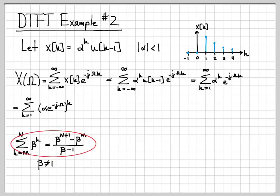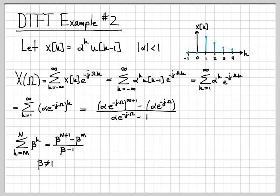So let's go ahead and use this result right here. So if we do that, we can write this as equal to alpha times e to the minus j omega raised to the infinity plus 1 because really our upper limit here is this is n. So we're taking n plus 1 minus the quantity beta raised to the bottom limit. The bottom limit was m equals 1. So we have raised it to the 1. And then I divide by the quantity beta minus 1. And again, in our case, beta is equal to alpha e to the minus j omega. So I have that quantity minus 1.